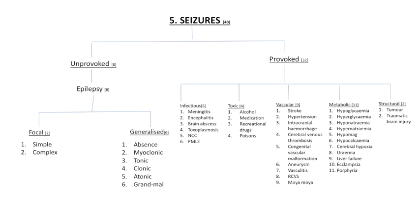We're going to be discussing 40 etiologies behind seizures. Let's just set a foundation first. A seizure is defined as an abnormal, excessive, or synchronous neuronal activity resulting in transient symptoms and signs including sensory, motor, and autonomic manifestations. Status epilepticus is reached when the duration of a typical seizure is longer than expected, usually above five minutes, or when seizures recur in succession without interval return to baseline consciousness. A postictal state is a transient period after a seizure characterized by changes in behavior, motor function, and neuropsychological performance.